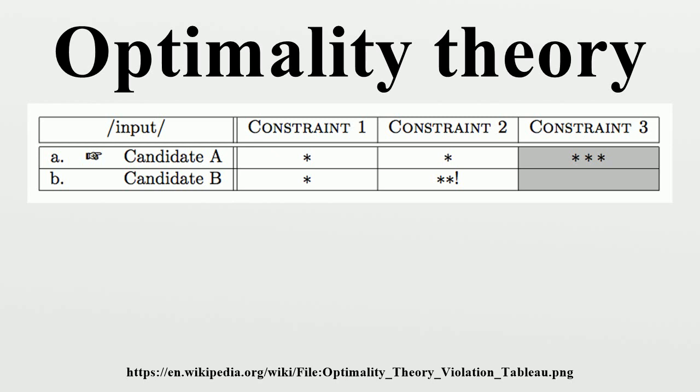There are three basic components of the theory. Gen takes an input and generates the list of possible outputs, or candidates. CON provides the criteria, in the form of strictly ordered violable constraints, used to decide between candidates. And EVAL chooses the optimal candidate based on the constraints, and this candidate is the output.